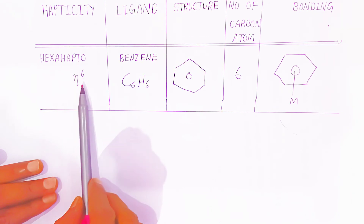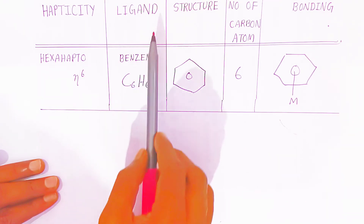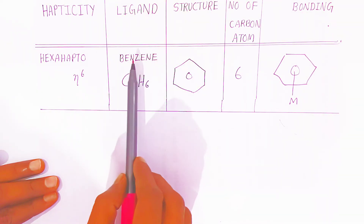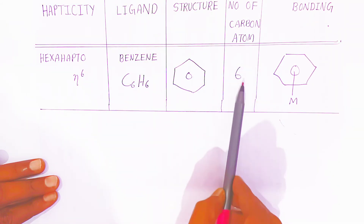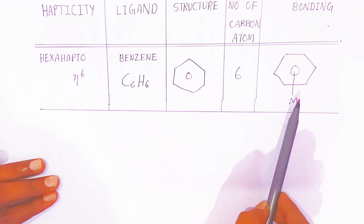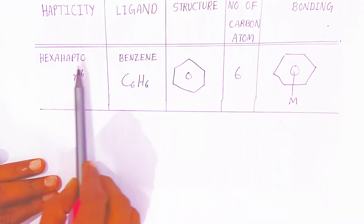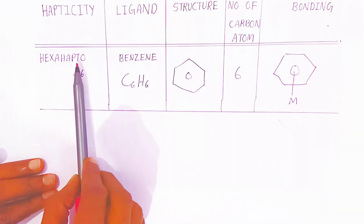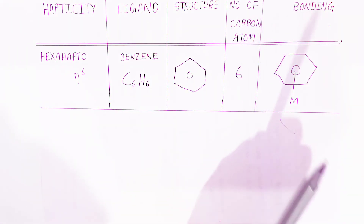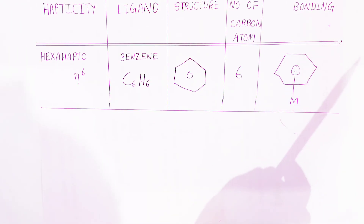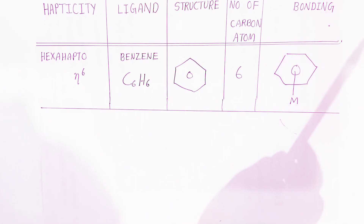One more example is the hexa hapto ligand. The ligand here is benzene, with formula C₆H₆. All six carbons are bonded with the metal, which is why it is called a hexa hapto ligand. These types of ligands, classified depending upon the number of carbon atoms bonded to the metal, are very important for the examination.